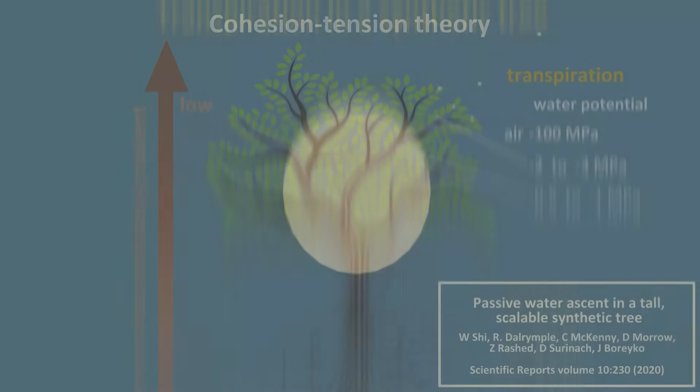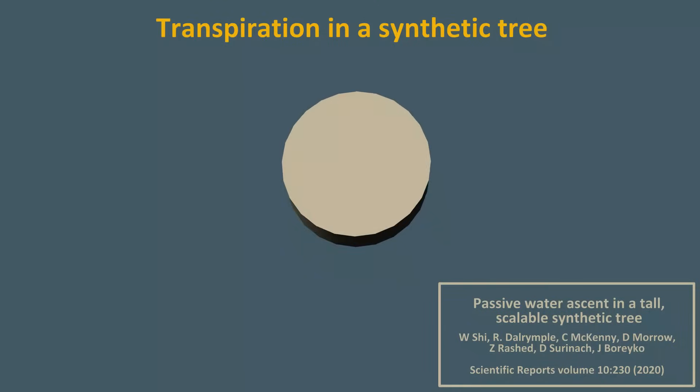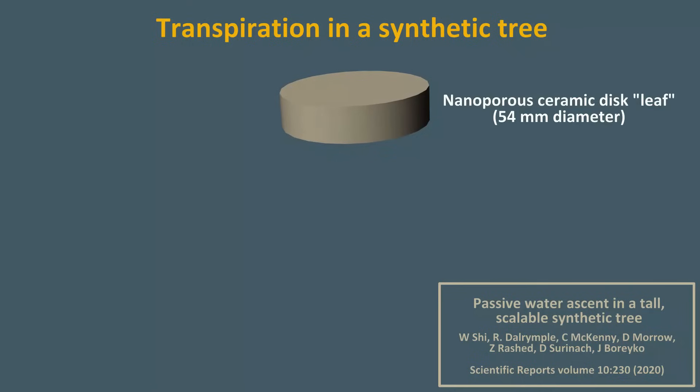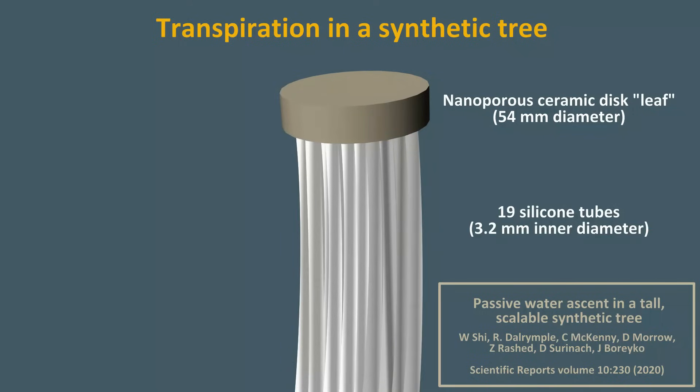In 2020, scientists at Virginia Tech demonstrated water flow via transpiration in a synthetic tree. They started with a nanoporous ceramic disc, representing a leaf through which water could evaporate. Then, they embedded 19 silicone tubes into the bottom of the disc, creating an airtight seal. The silicone tubes represent a bundle of xylem.